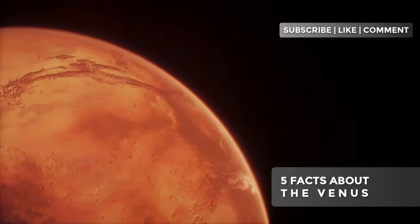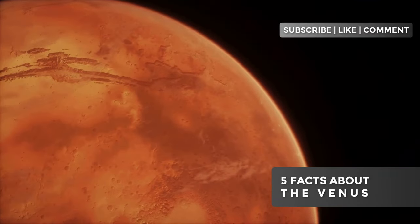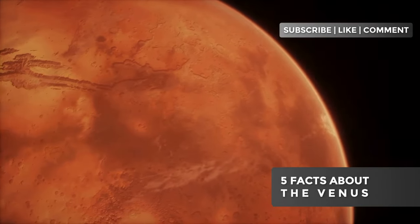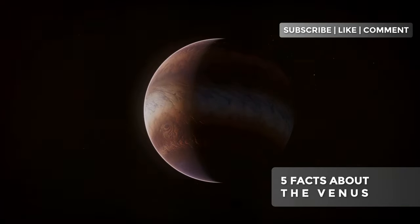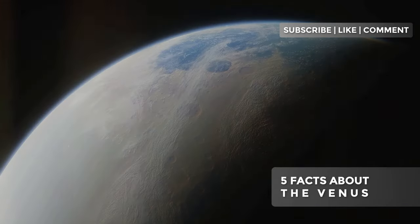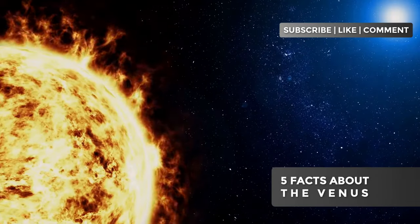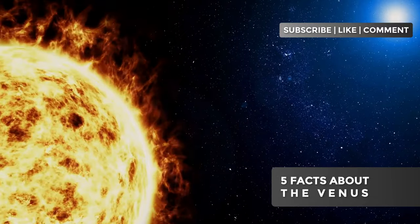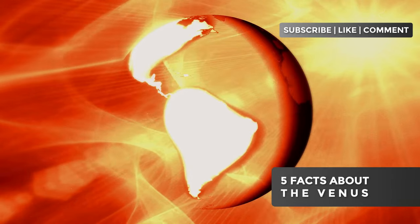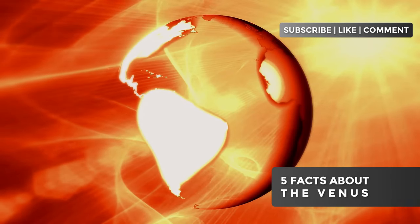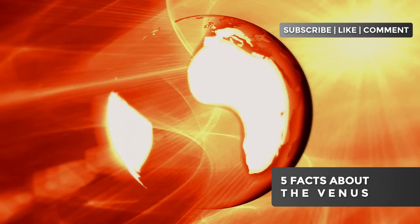Picture a world where the concept of hot is cranked up to 11 on a scale that defies human comprehension. Welcome to Venus, the planet that truly earns its title as a celestial inferno. With average surface temperatures of about 863 degrees Fahrenheit, this neighboring world holds the record for the hottest planet in our solar system, outstripping even Mercury, which is closer to the Sun. But what makes Venus so exceptionally hot? The answer lies in its dense atmosphere, composed mainly of carbon dioxide. This gas in such high concentration creates a runaway greenhouse effect, trapping solar heat with terrifying efficiency. To put it in perspective, the temperature on Venus's surface is enough to melt lead, zinc, and even some types of steel.